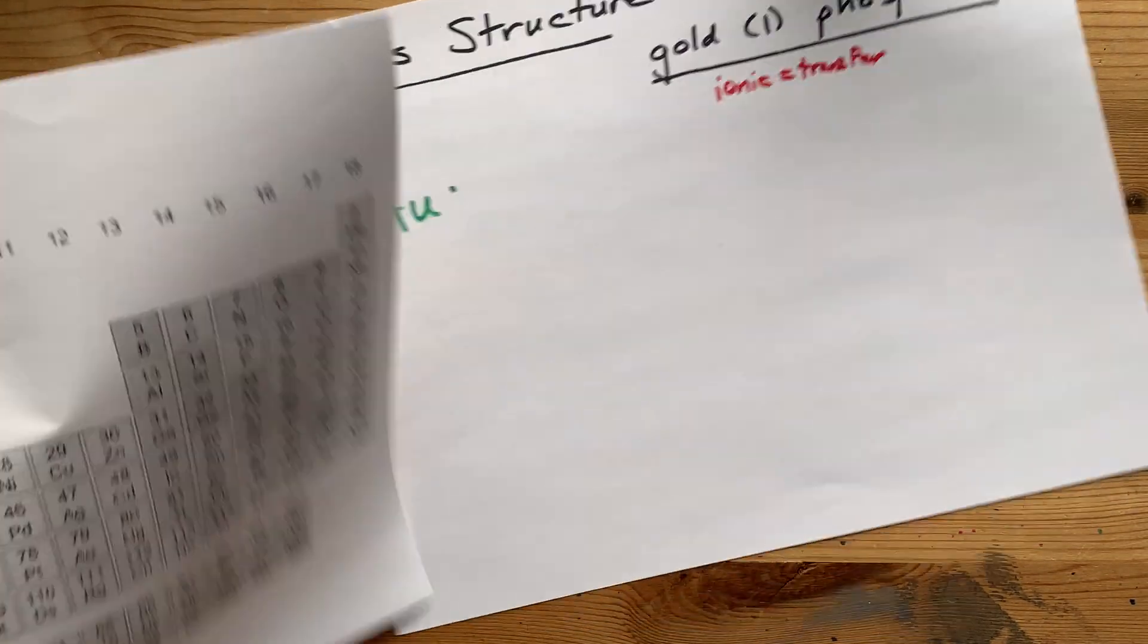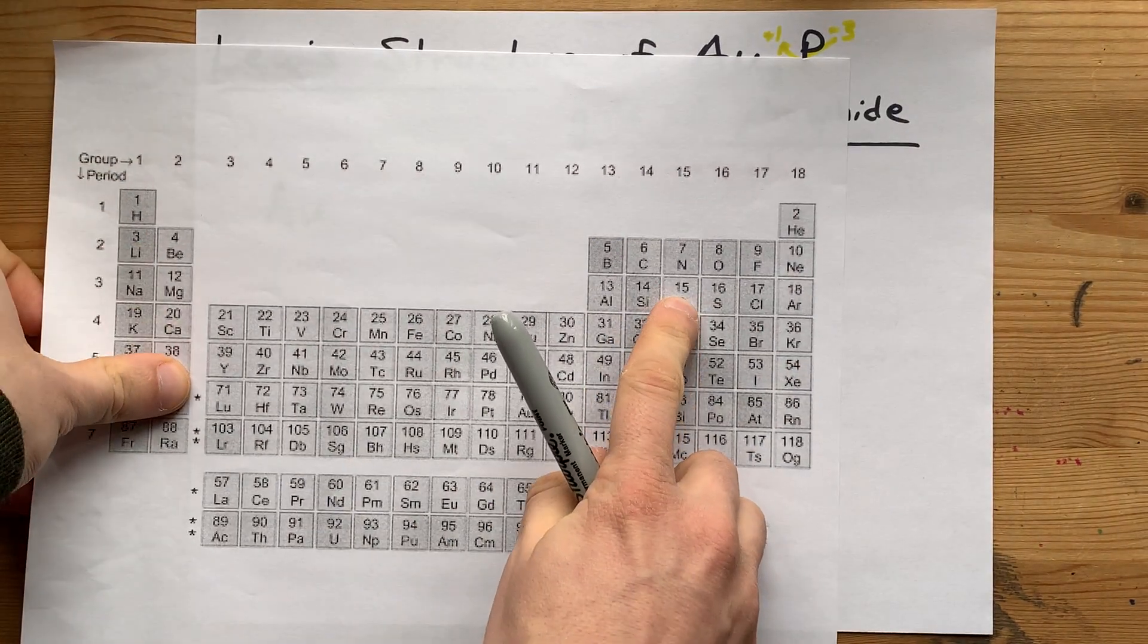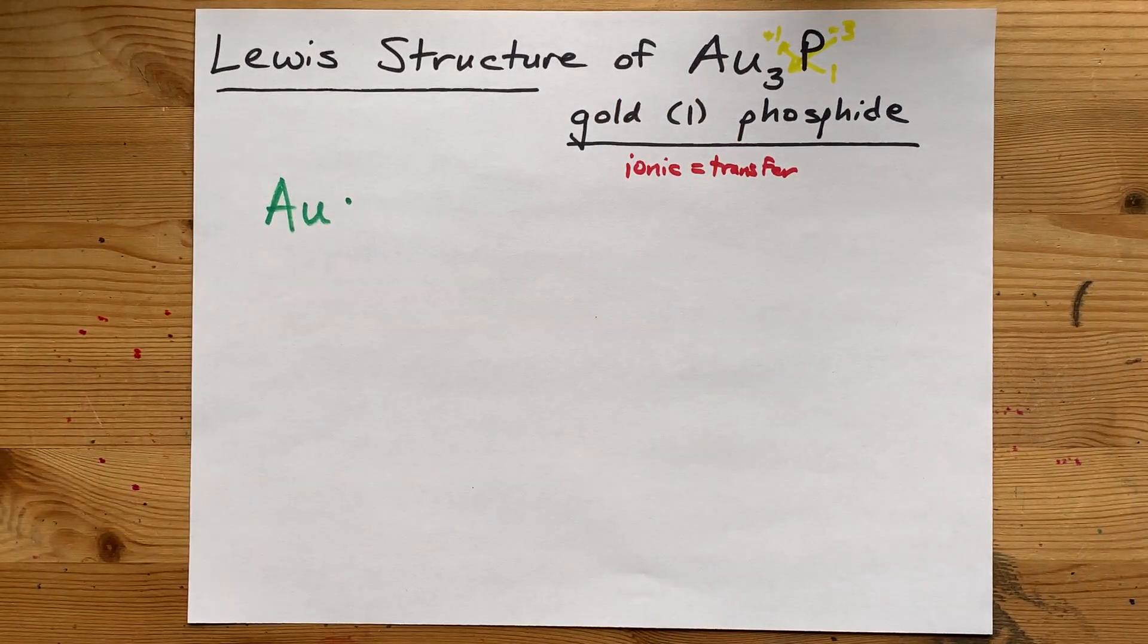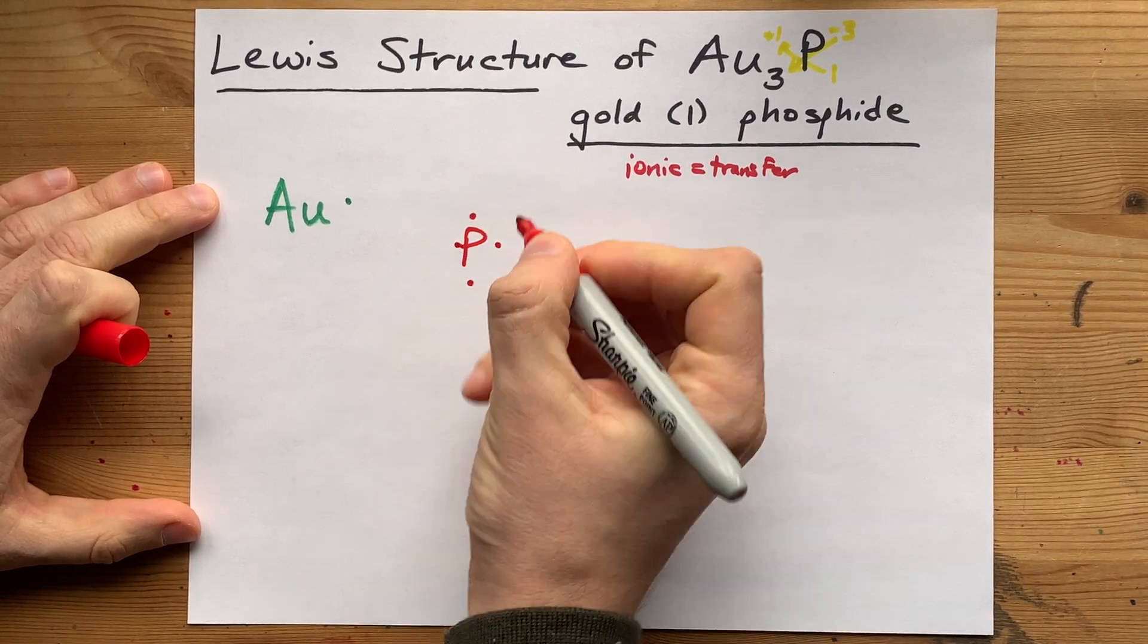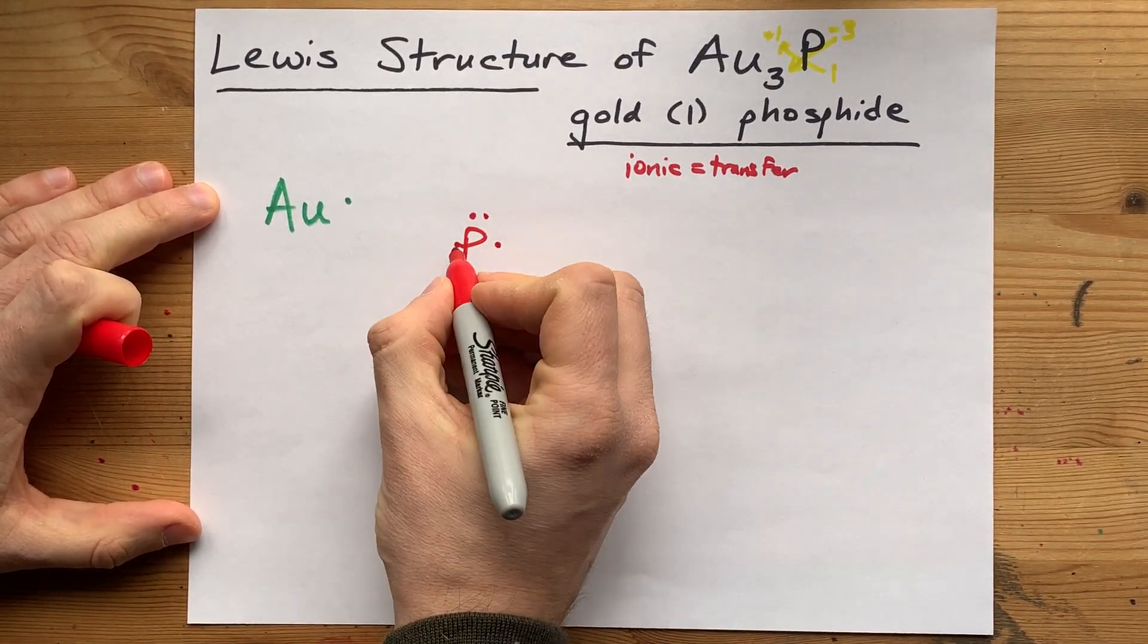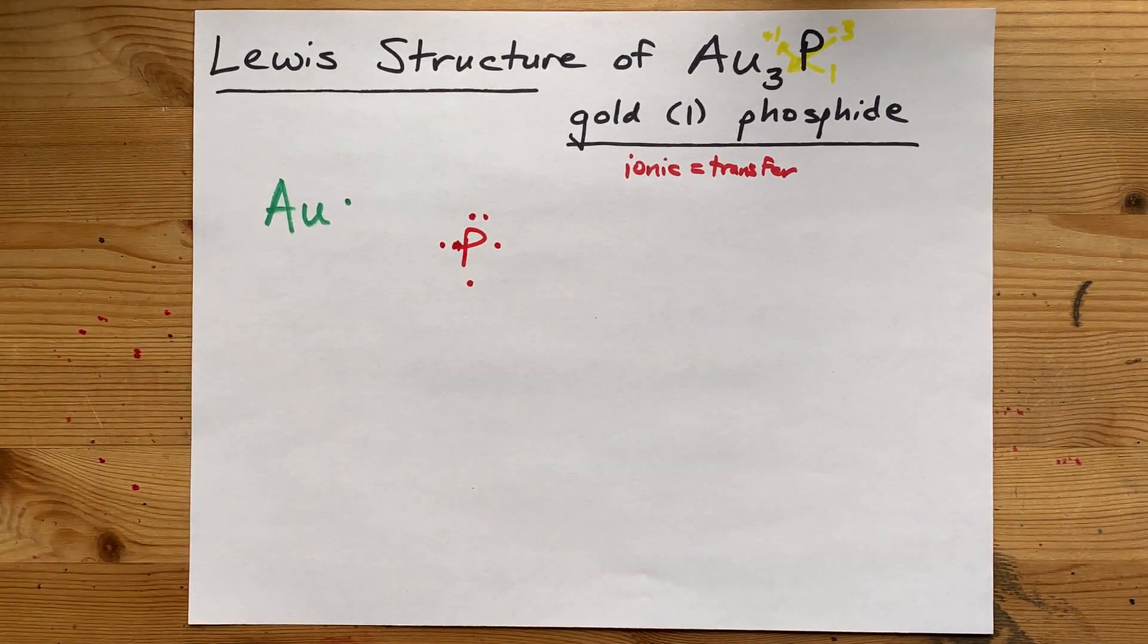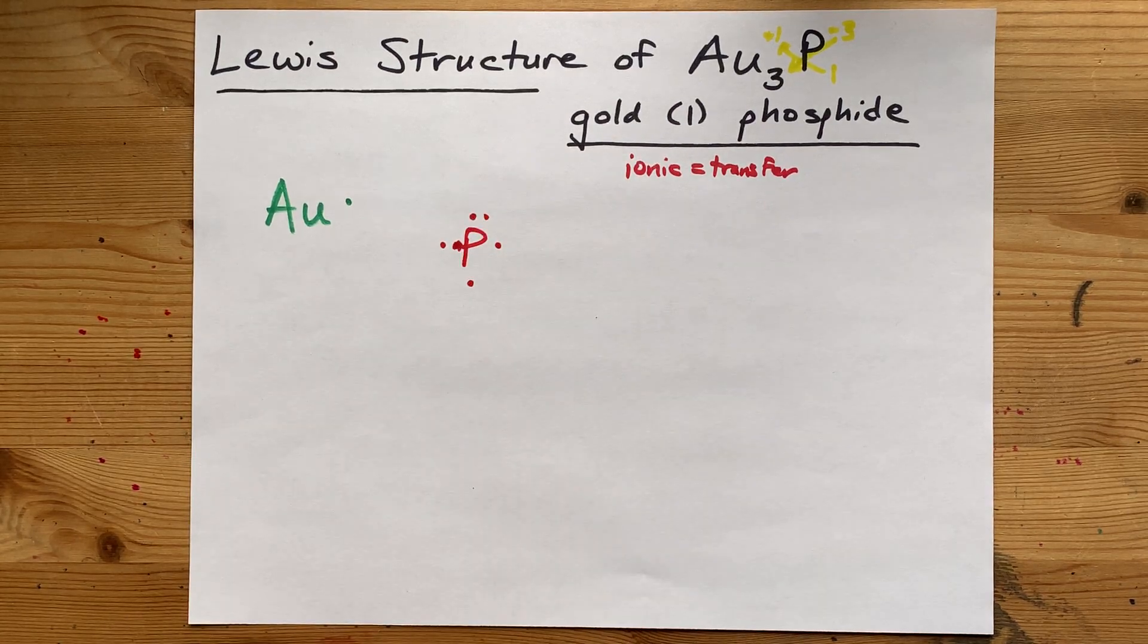Great. Now, phosphorus, the non-metal, is easier. Group 15, each of those atoms brings 5 electrons with it. So, I'm going to draw my P with 1, 2, 3, 4, 5 valence electrons. I didn't make that one very clear, so I'm going to scratch it out and redraw it. There we go. Now, please note, I spread them out before I doubled them up.